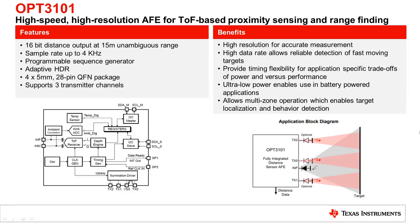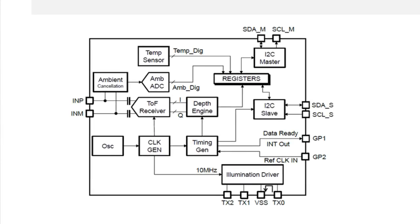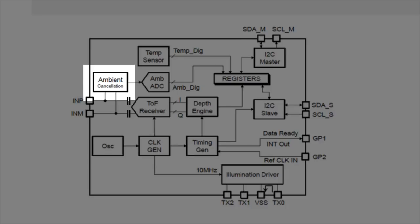OPT3101 is a high-speed, high-resolution analog front end used for time-of-flight based proximity sensing and range finding. OPT3101 integrates the complete signal processing pipeline to make a complete time-of-flight based proximity sensing system. An in-depth look at the block diagram will show that with OPT3101 you have the flexibility to choose your optics, as both the emitter and the receiver are external. Also within the OPT3101 architecture is an ambient cancellation block that supports 200 microamps of ambient current, which translates to over 130,000 lux of ambient sunlight while using various different photodiodes, making it the perfect option for outdoor applications.